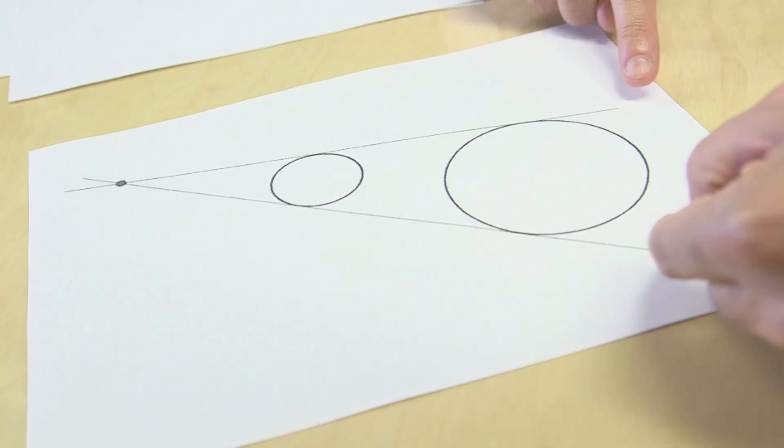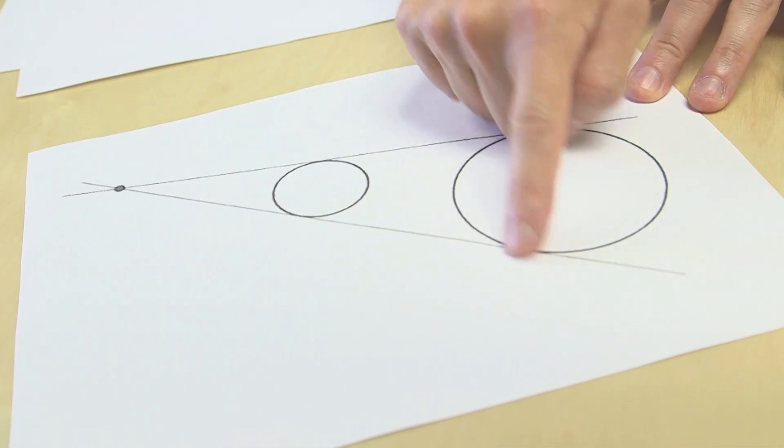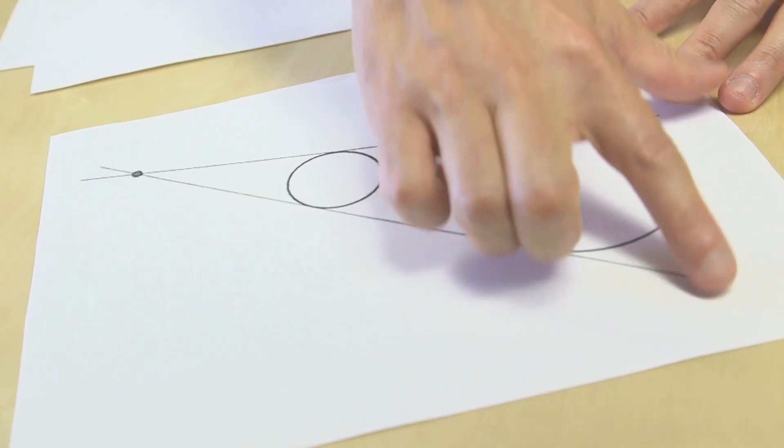To be precise, we are drawing two outer tangents, because you can cross these like this, a tangent and a tangent. They are inner tangents that cross, but let's talk about the outer tangents.